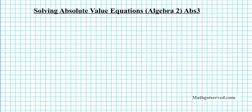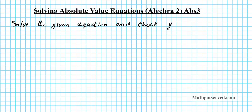G'day students. In this case we're going to be going over an example on how to solve absolute value equations. The instructions for this example are to solve the given equation and check your results. The problem under consideration is negative 8 minus 2 times the absolute value of 3n minus 2 is equal to negative 40.